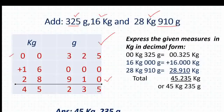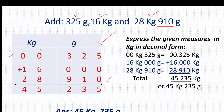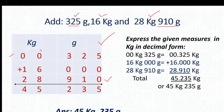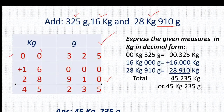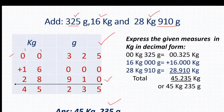We have to do additions: 5 plus 0 plus 0 equals 5. 2 plus 0 plus 1 equals 3. 3 plus 0 plus 9 equals 12 — 2 we write here and 1 kg will be added to the next column. So 1 plus 0 is 1, 1 plus 6 is 7, 7 plus 8 is 15 — 5 written here and 1 will be added to the next column. So 1 plus 1 plus 2 equals 4. Our answer is 45 kg 235 gram.